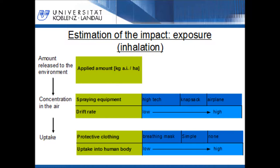In the next step, the agricultural worker's exposure to the pesticide is estimated. The exposure for a pesticide sprayer can be estimated, for example, by the applied amount of the used pesticide, the drift rate of the spraying equipment, and the used protective clothing. The applied pesticide amount is the amount released to the environment. A part of the applied pesticide amount, dependent on the application method, gets into the air. Through the use of protective clothing, the uptaken pesticide dose can be reduced. For example, through the use of a breathing mask, nearly no pesticides are uptaken. Values for the drift rate or the uptaken amount can be taken from scientific literature or have to be evaluated.